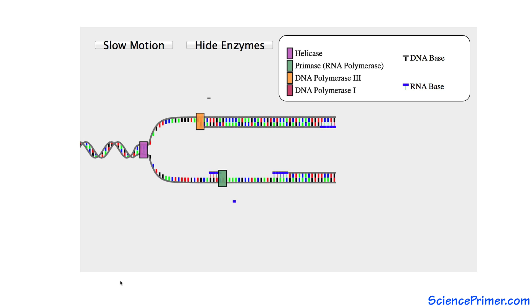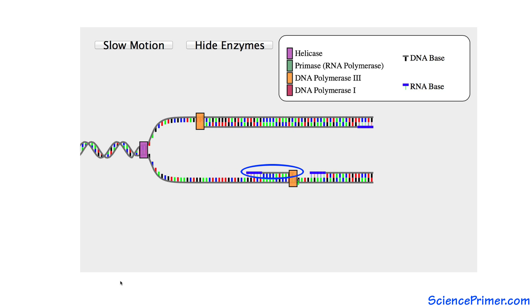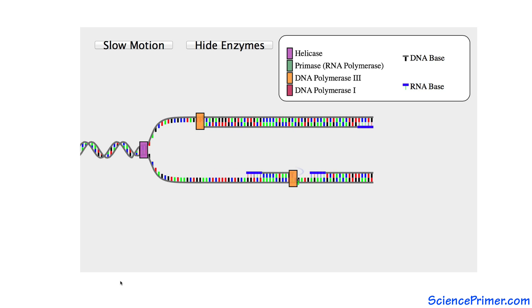As replication moves along the template strand, a series of shorter DNA polymers are formed. Each is initiated with its own RNA primer. The short lengths of double-stranded DNA formed along the lagging strand are called Okazaki fragments.